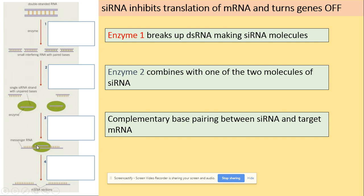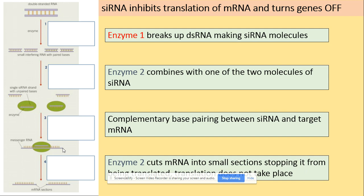Complementary base pairs are made between the single-stranded siRNA and the mRNA of interest — the mRNA we wanted to use to produce a specific protein. Once they bind, enzyme 2 comes along and chops our mRNA of interest. If the mRNA of interest is degraded and no longer codes for the protein of interest, translation cannot take place in the right manner, and we do not get our protein. This shows how siRNA inhibits the translation of mRNA.